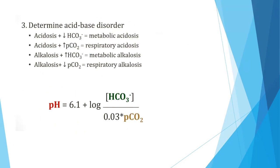After determining acidosis or alkalosis, we identify the disorder type. Acidosis with decreased bicarbonate means metabolic acidosis. Acidosis with increased pCO2 means respiratory acidosis. Alkalosis with increased bicarbonate means metabolic alkalosis. Alkalosis with decreased pCO2 means respiratory alkalosis. Remember: pH is directly proportional to bicarbonate and inversely proportional to pCO2.